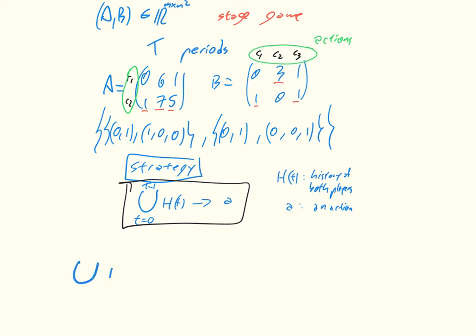In this example we have to consider all possible histories. The union of H(t) for t equals zero to t minus one — first, when t equals zero, when we haven't played before, our history is just the empty set. So the very first time we play against each other, we know nothing about each other.